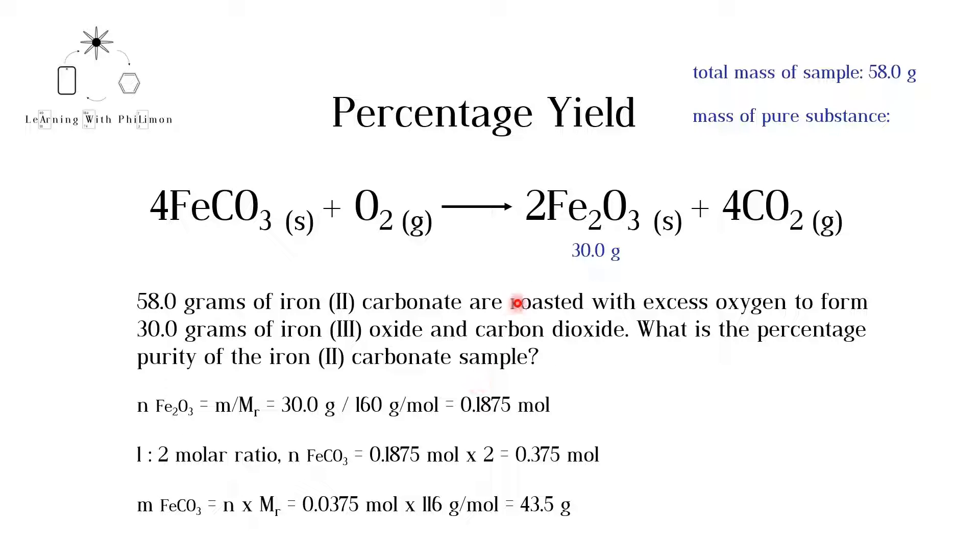Fe2O3 has a coefficient of 2, and FeCO3 has a coefficient of 4. Therefore, there is a 1 to 2 molar ratio. 2 moles of FeCO3 are required to form 1 mole of Fe2O3. Therefore, we multiply the moles of Fe2O3 by 2. 0.375 moles of FeCO3 are required.